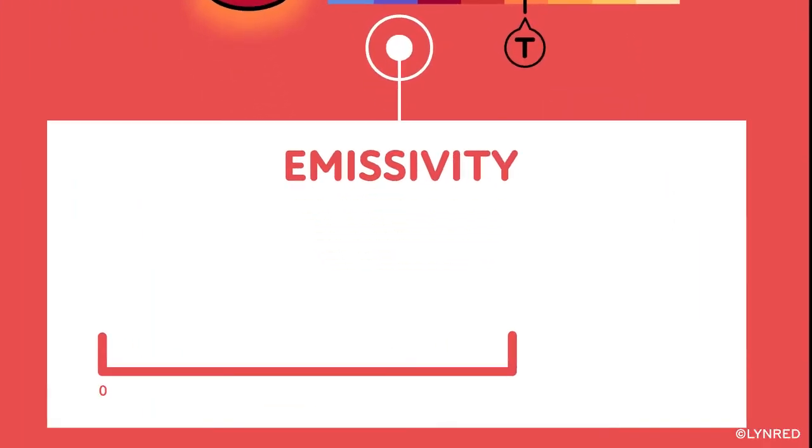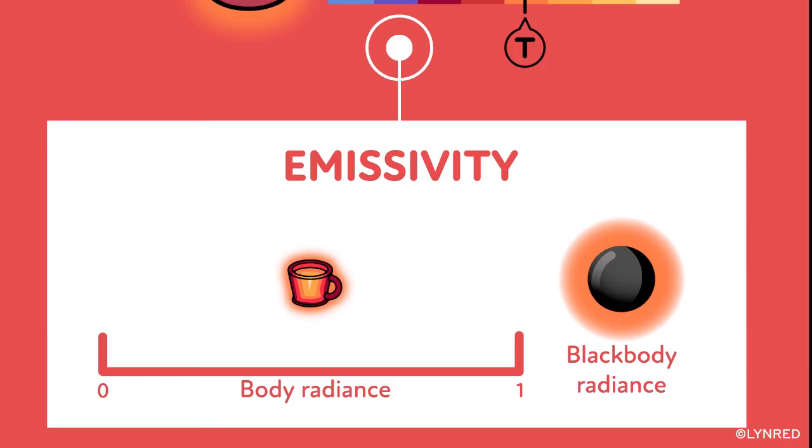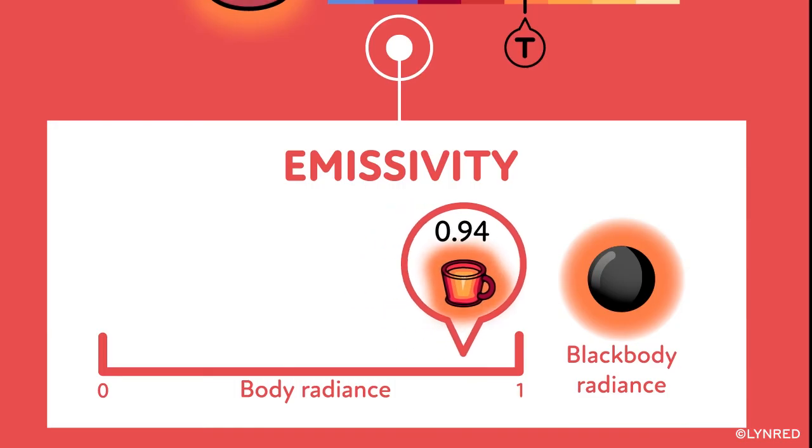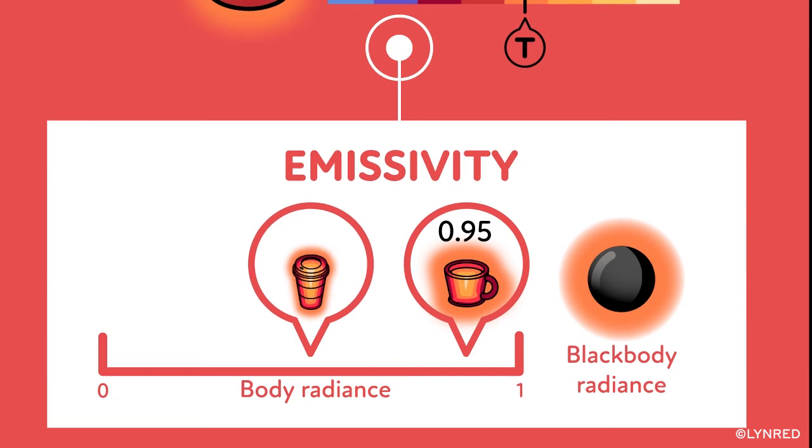Ranging from 0 to 1, emissivity compares the radiance of the body with the radiance of a black body. The closer the emissivity of the body is to 1, the closer its radiance is to that of a black body. If its emissivity is 0.5, it emits half the radiation of a black body.